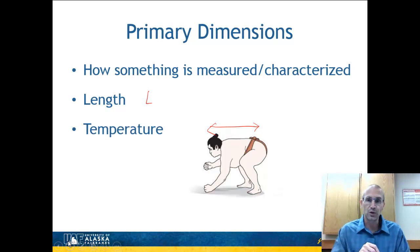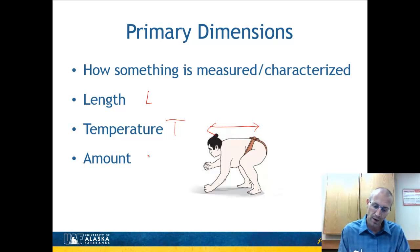He would have a temperature. We'll call that T. There's an amount of this sumo wrestler who's fairly large, so he would have some type of mass. I'll call that M. And he's probably of some certain age. So we'll go ahead and call that T. That's not necessarily an exhaustive list, but those are the main dimensions that we'll be interested in in this class.